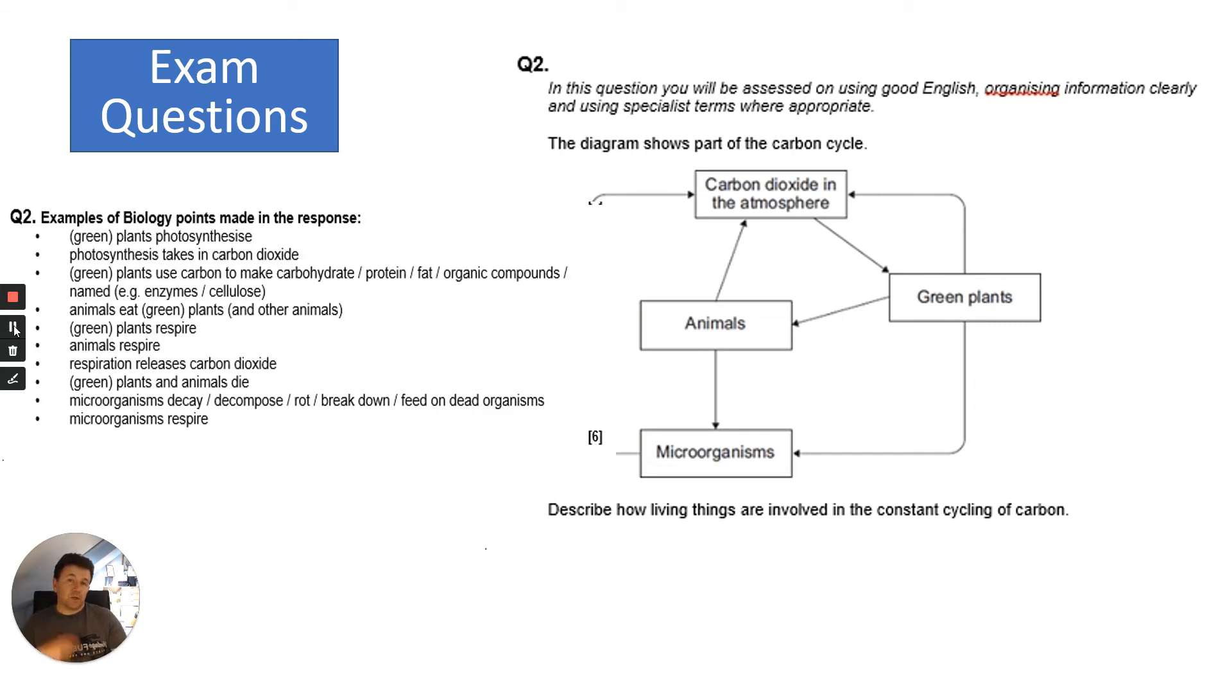Your answer could include lots of these different points. It doesn't need all of these for six marks. Plants photosynthesize and therefore take in or remove carbon dioxide from the atmosphere. They use the carbon to make carbohydrates, proteins, and fats. Animals eat those plants and then they respire. Plants respire as well, and they release carbon dioxide into the atmosphere. Plants and animals will die, and therefore microbes decay them, respire, and release carbon dioxide.